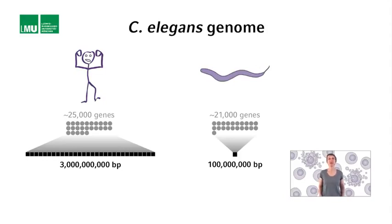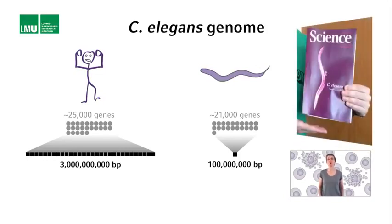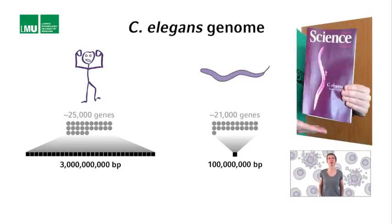The C. elegans genome was the first genome of a multicellular organism to be sequenced. It was published in 1998 in the journal Science. It provided technical and conceptual insight that was critical for the completion of the human genome project, for which a draft sequence was published in 2000 and which was essentially completed in 2003.